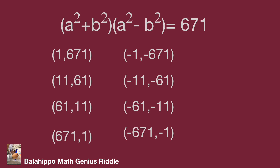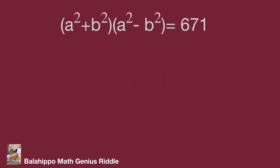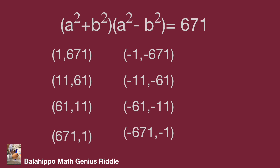Next, I am going to narrow down the range for the number groups. Take a look at the quantity A² + B², where A and B are integers. Then A² + B² must be larger than 0. And since 671 is positive, we can confirm that A² + B² is greater than 0. That means the number groups for these two quantities are all positive, so we remove all the negative number groups.